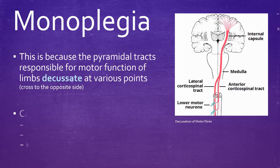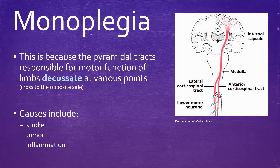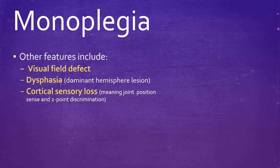Causes of this monoplegia affecting the arm include stroke, tumour, and inflammation. Other features which co-present include visual field defects, dysphasia, and cortical sensory loss — by this I mean loss of joint position sense and two-point discrimination.